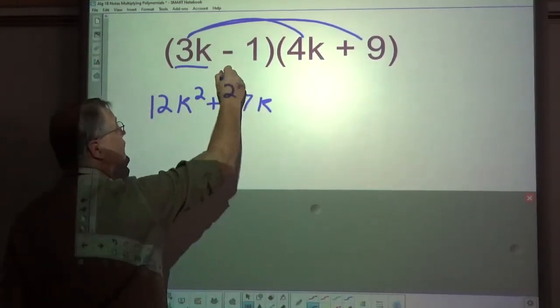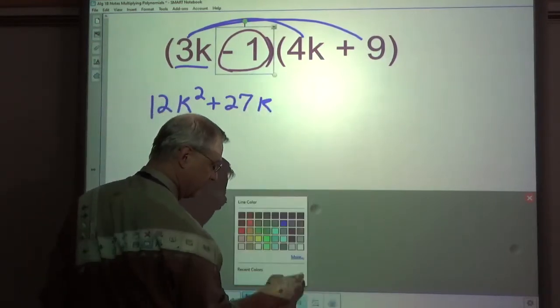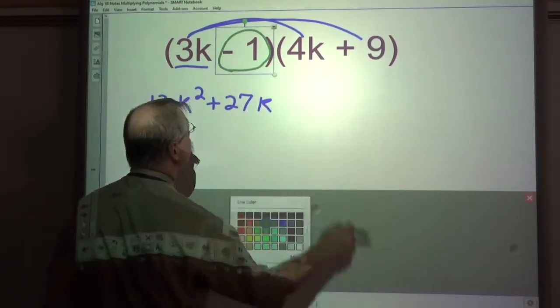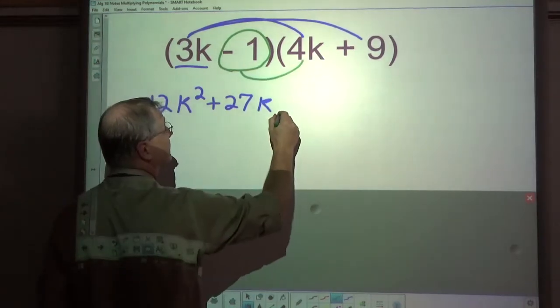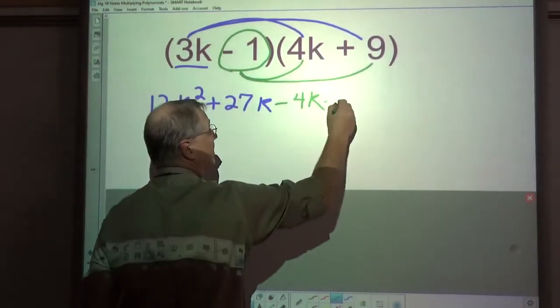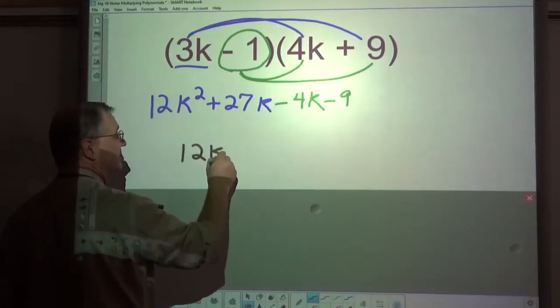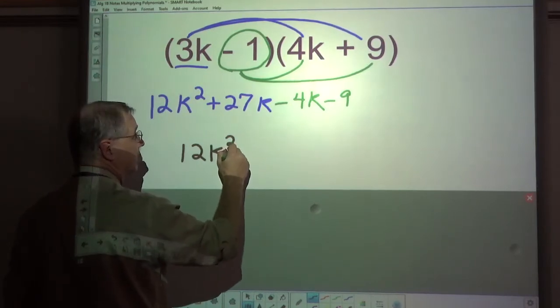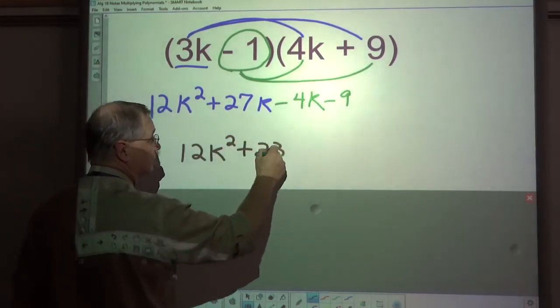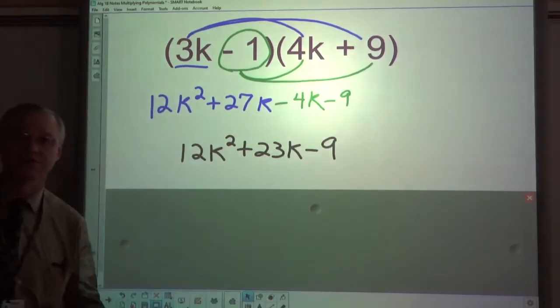Now I'm going to distribute the negative 1. And that wasn't a good choice for a color. Let's switch that up. How about green? Sure. And then negative 1 times 4k, negative 4k and negative 9. Combine your like terms. 12k squared plus 23k minus 9. There's your answer.